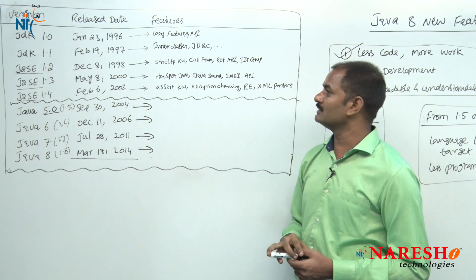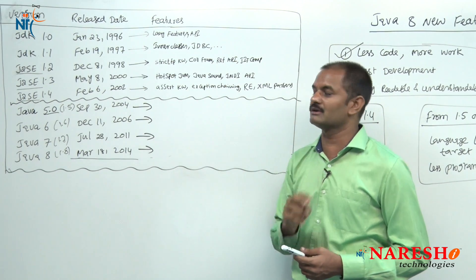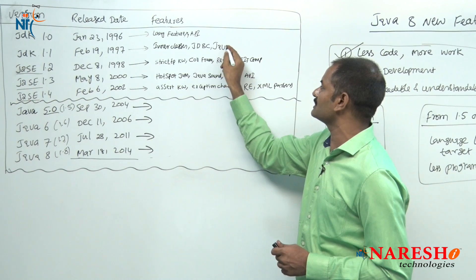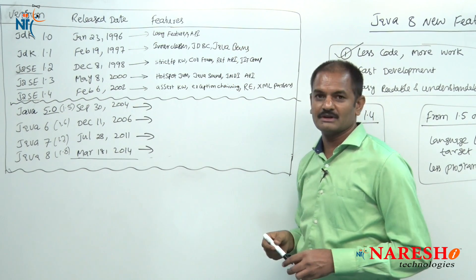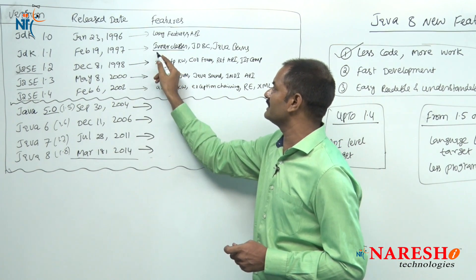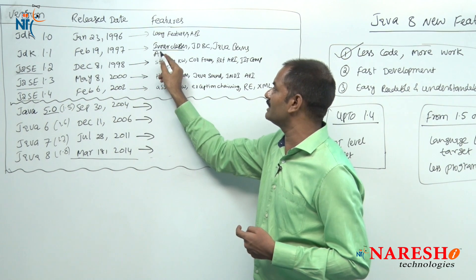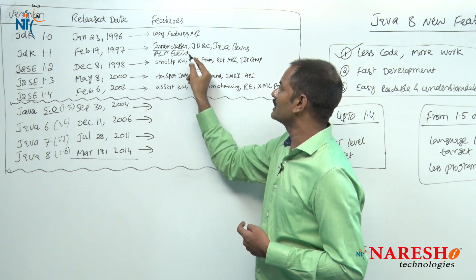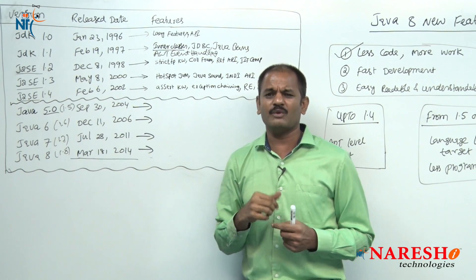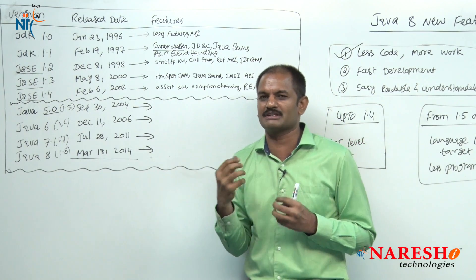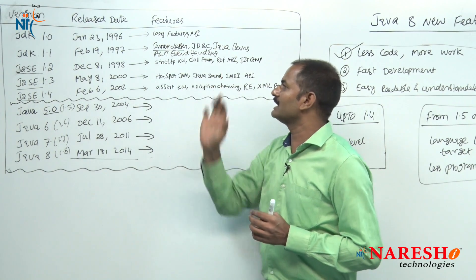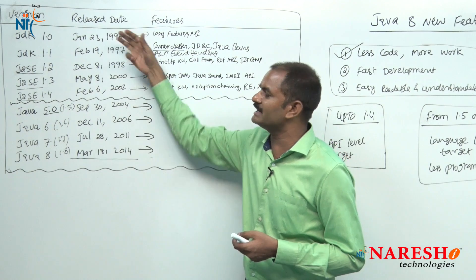In version 1.1, they gave two important topics: inner classes and JDBC, and also Java Beans concept — though we do not use Java Beans much nowadays. Inner classes is a very important concept. This inner classes concept was given for retooling the AWT event handling mechanism — to modify the event handling mechanism. Just remember: to modify the AWT event handling procedure, they gave the inner classes concept.